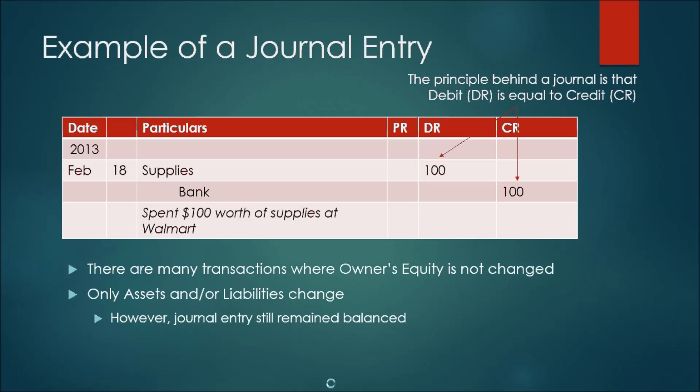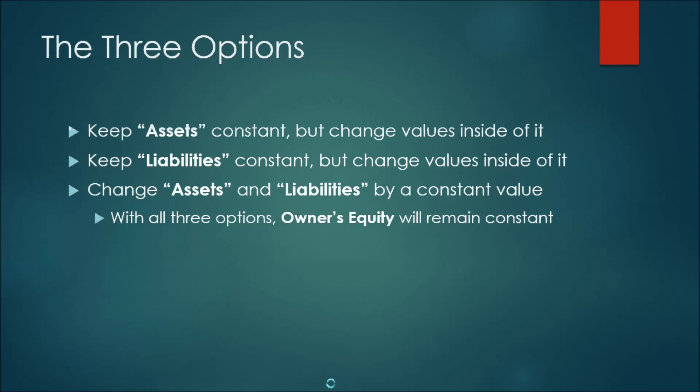There are three ways to modify accounts without changing owner's equity. The first is to keep the total assets constant but change the values inside the asset account. The second is to keep total liabilities constant but change the values inside the liabilities account. The third way is to change both assets and liabilities by a constant value. In all three of these options, owner's equity will remain constant.